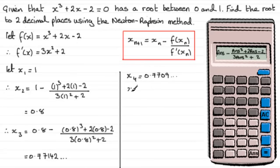This saves a lot of time if you can do this. You can see that we have no change in the third decimal place here, so to two decimal places our root is x = 0.77 to 2 decimal places.